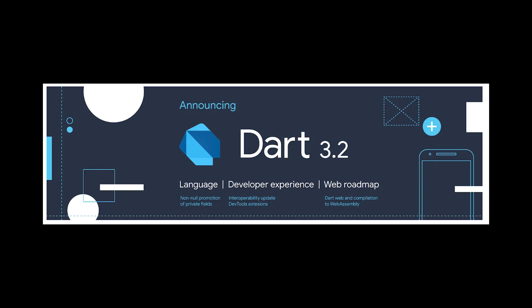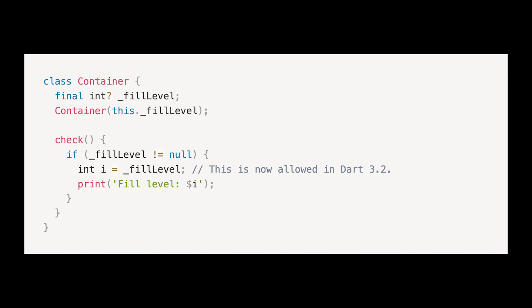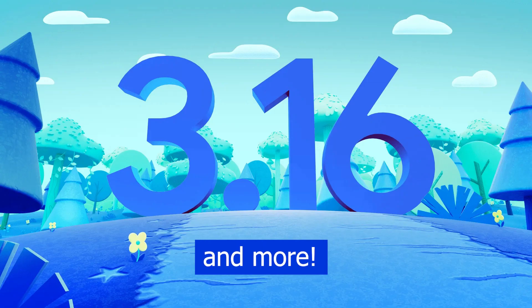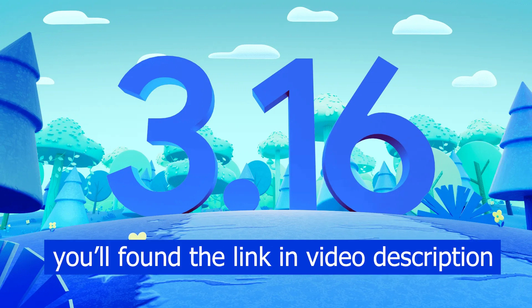The VS Code Flutter sidebar gives easy access to Flutter DevTools screens, active debug sessions, available devices, creating new projects, hot reload and restart, running flutter doctor, and much more. The last topic is Dart 3.2. The key feature is non-nullable promotions for private final fields — a feature of Dart's null safety system that allows nullable variables to be automatically promoted to non-nullable if it can be determined they will never be null. In Dart 3.2, this is now supported for private final fields, so a nullable private final field can safely be used as non-nullable inside the same class.